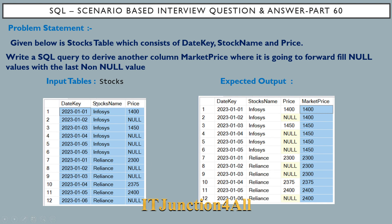The problem states that given below is a stock table which consists of a date key column, a stock name column, and a price column. We need to write a SQL query to derive another column called market price where it is going to forward fill null values with the last non-null value.